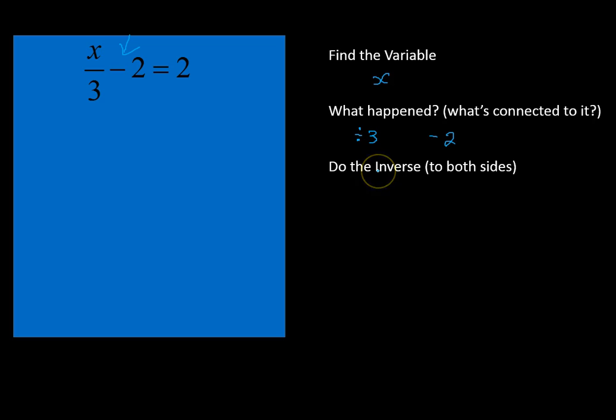So, let's start here by peeling off this layer, this minus 2. We're going to get rid of that first by adding 2 to both sides of the equation. Let's write that down. When we add 2 to both sides of the equation, notice we make the equation less complicated. Now all we have is x over 3 on the left, and 2 plus 2 is 4 on the right side.